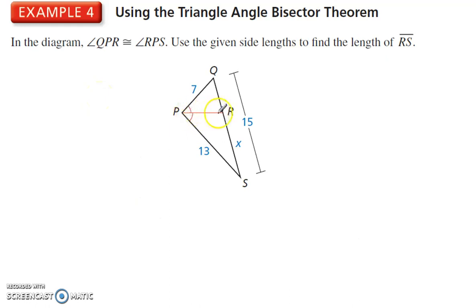Problem here, we have a ray, and it bisects. In that diagram, we have this angle. QPR is congruent to angle RPS. This info tells us that this is a bisector. If those two angles are congruent. Use the given side lengths to find the length of RS. We are looking for this length right here.